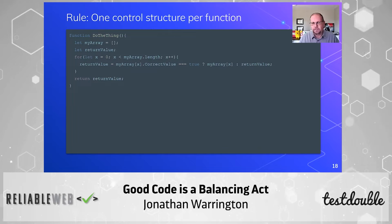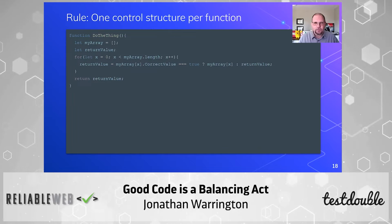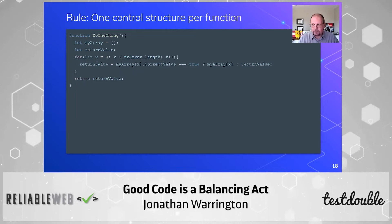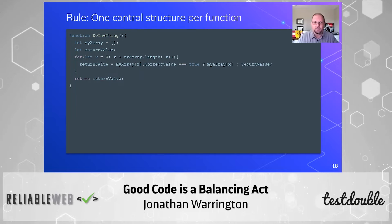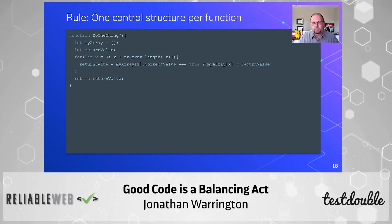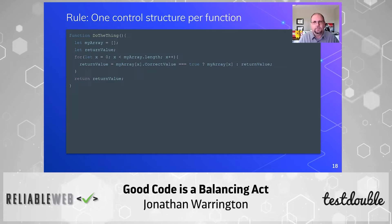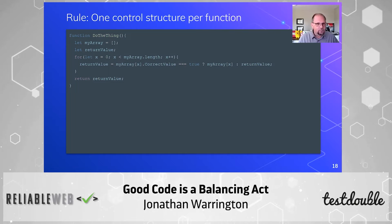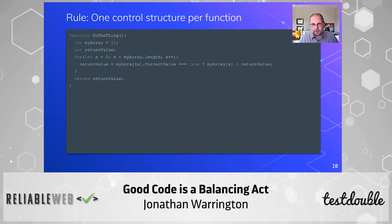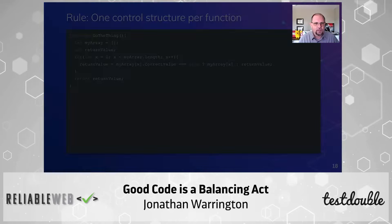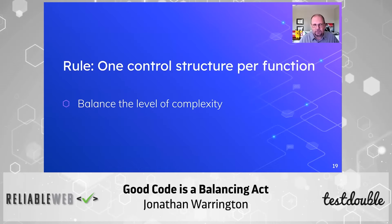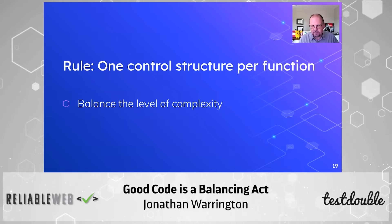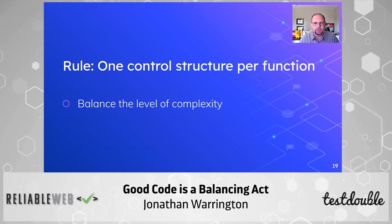This is another balance issue around readability and simplification. The ternary operator might have been able to replace the if statement inside a for loop. Personally, I used to think the ternary operator was difficult to understand and would prefer if-else. Over the years, I've actually come to like it — so even your judgment of what's easy to read does change over time. That was another rule pushing for balance, maintaining the level of complexity and trying to keep all your functions as simple as possible.